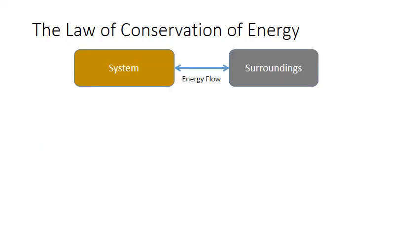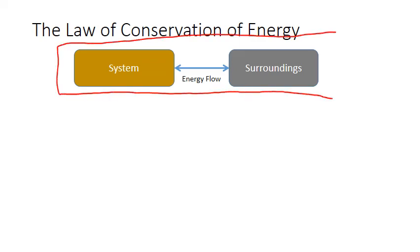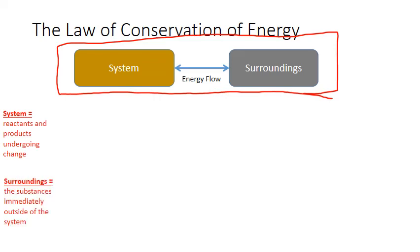All forms of calorimetry utilize the law of conservation of energy and the fact that the heat transferred into or out of a chemical reaction must be exchanged with its surroundings. A calorimeter is designed to contain and thermally isolate both the system and the surroundings. The system in thermochemistry is defined as the reactants and products undergoing change, while the surroundings are the substances immediately outside of the system.